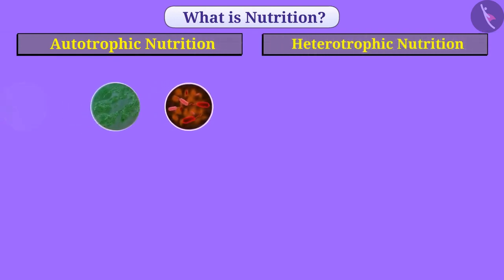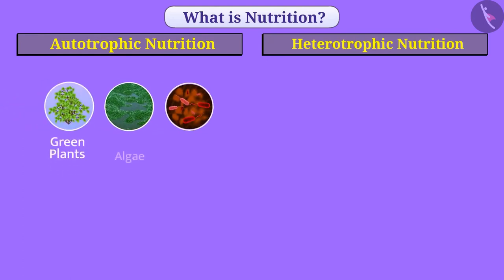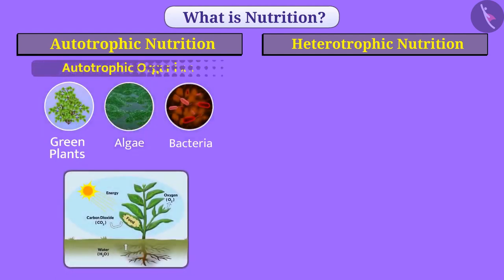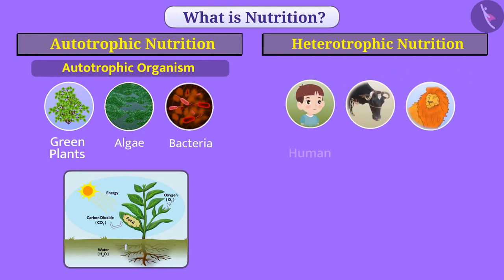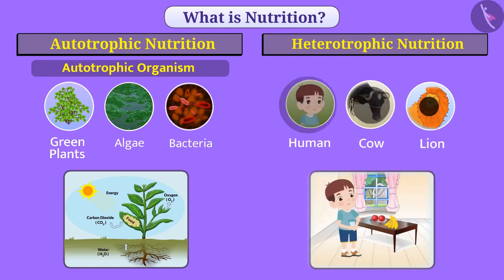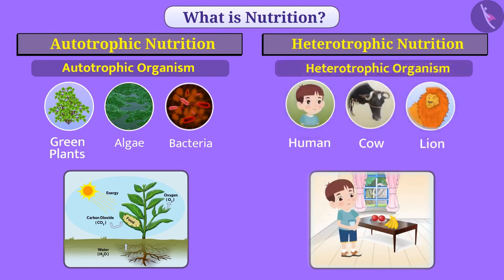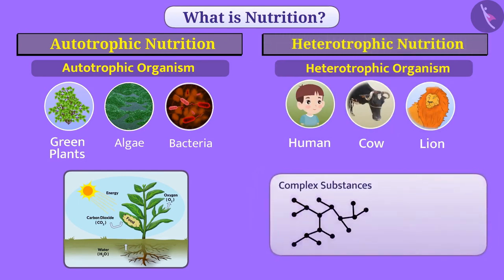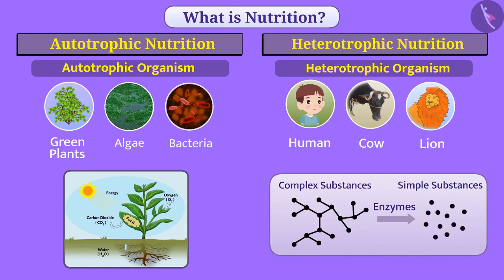In nature, there are many organisms such as green plants, algae, and some bacteria that make their own food. These are called autotrophic organisms and their mode of nutrition is called autotrophic nutrition. Other organisms such as humans, cows, and lions depend on other organisms for their food. These are called heterotrophic organisms and their mode of nutrition is called heterotrophic nutrition. They eat complex substances and with the help of various biocatalyst enzymes, they break complex substances into simple substances and obtain their nutrition.